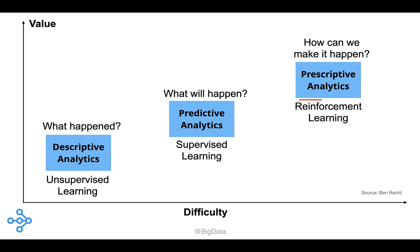While many data scientists routinely use unsupervised and supervised learning, not as many have experience with reinforcement learning. But in recent years, prominent examples of self-learning systems relied on reinforcement learning, and those success stories have made RL into a hot topic among AI researchers.